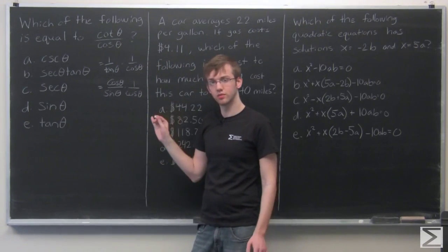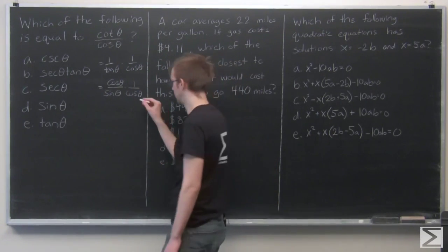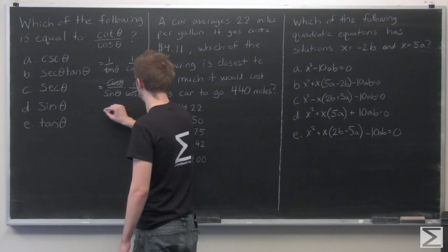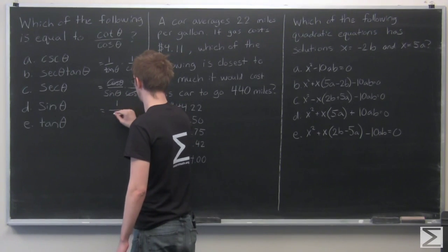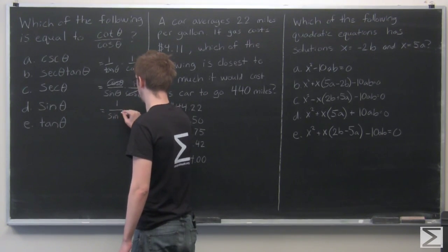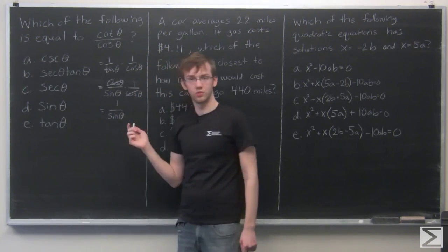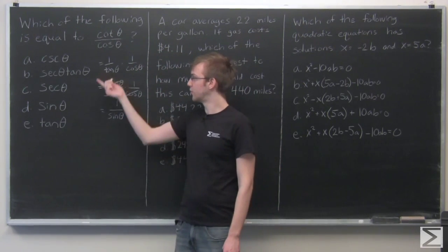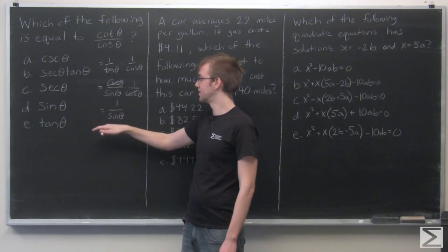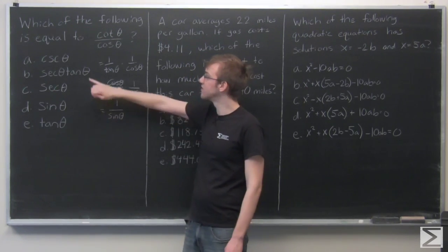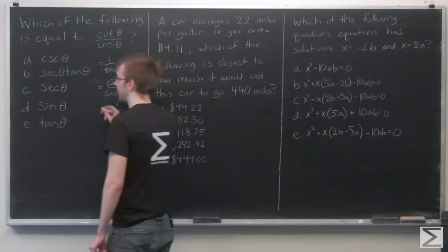So now we see we can simplify this expression by canceling out cosine. And we're left with just 1 over sine. Now which of these corresponds to this? 1 over sine is the same thing as cosecant. So our answer is A.